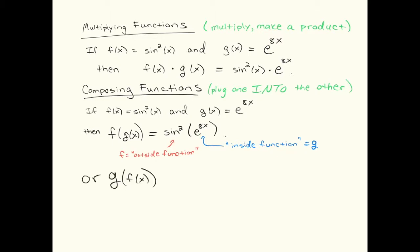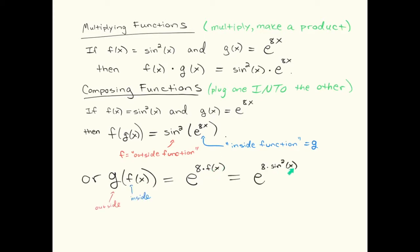Of course, we could do it the other way around, and the symbols will always show you what's going on. g of f of x is the opposite way: g is going to be the outside, and f is going to be the inside. Now I'm going to take the g function, which is e to the 8x, and everywhere I see an x, I'm going to replace it with the f function. Here the f is getting plugged into the g. The f is sine squared, so this is g of f of x.